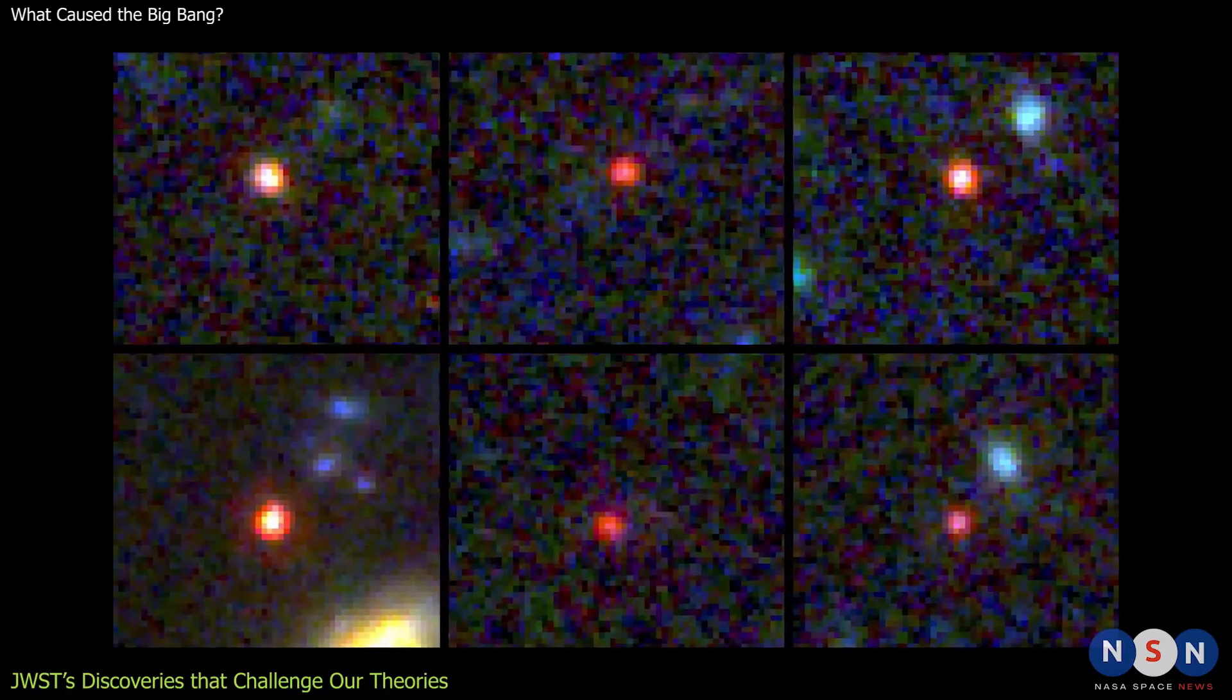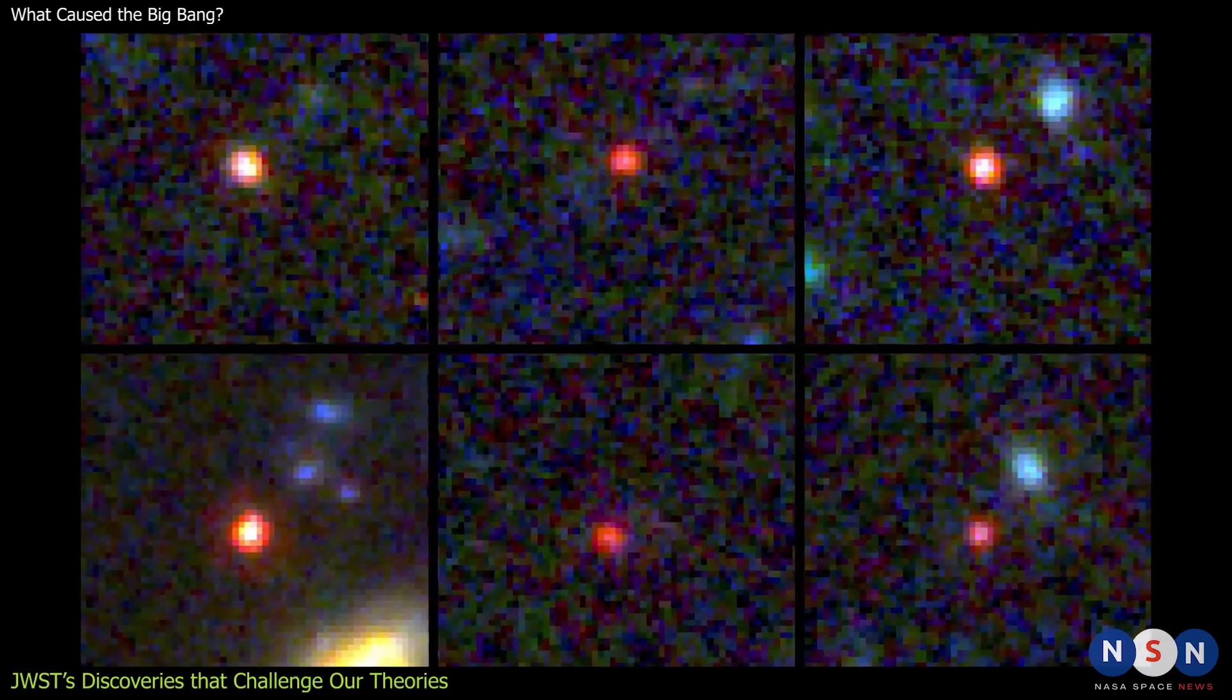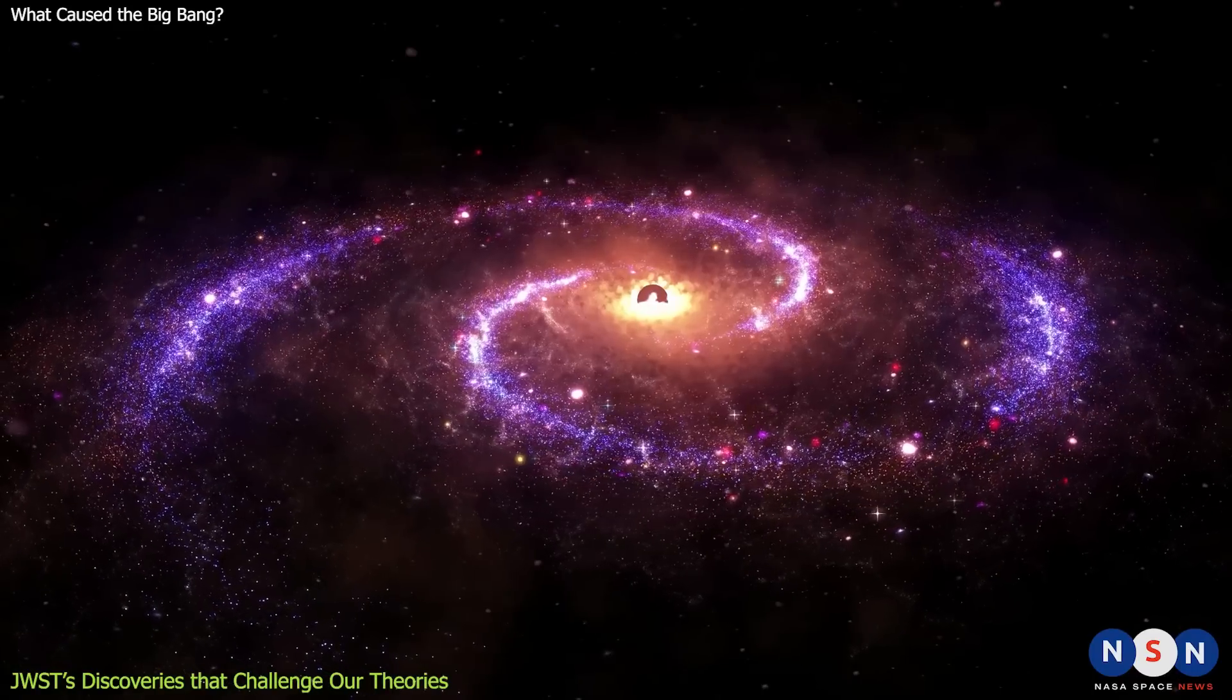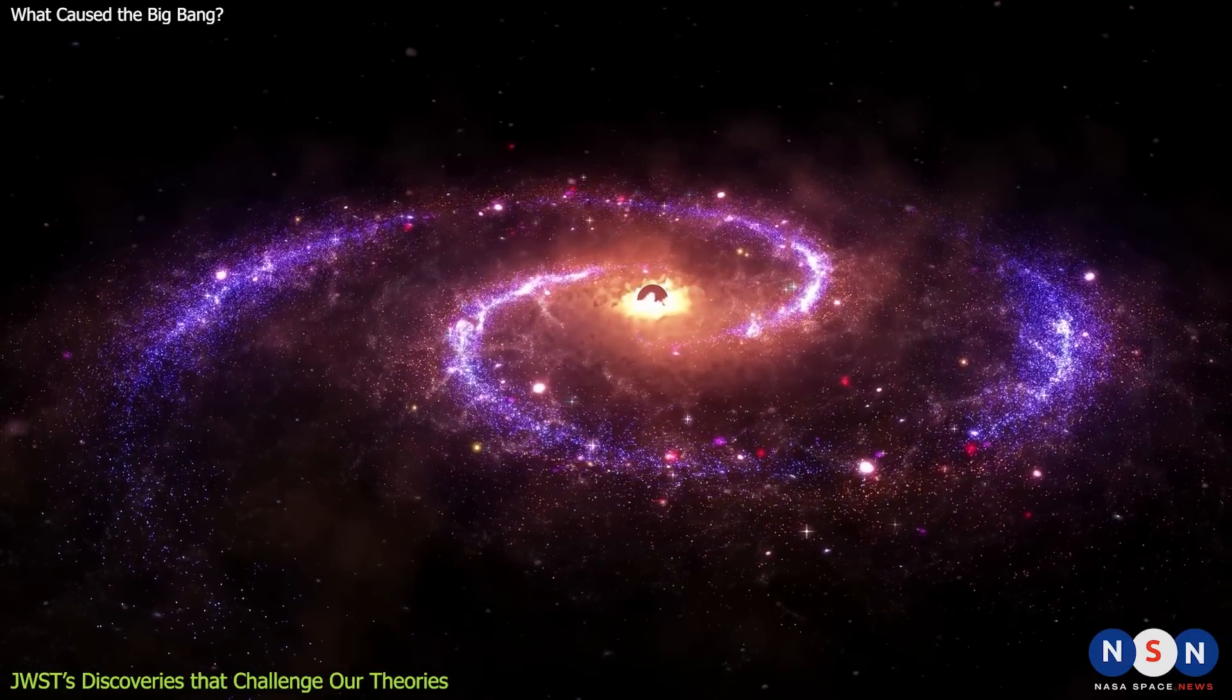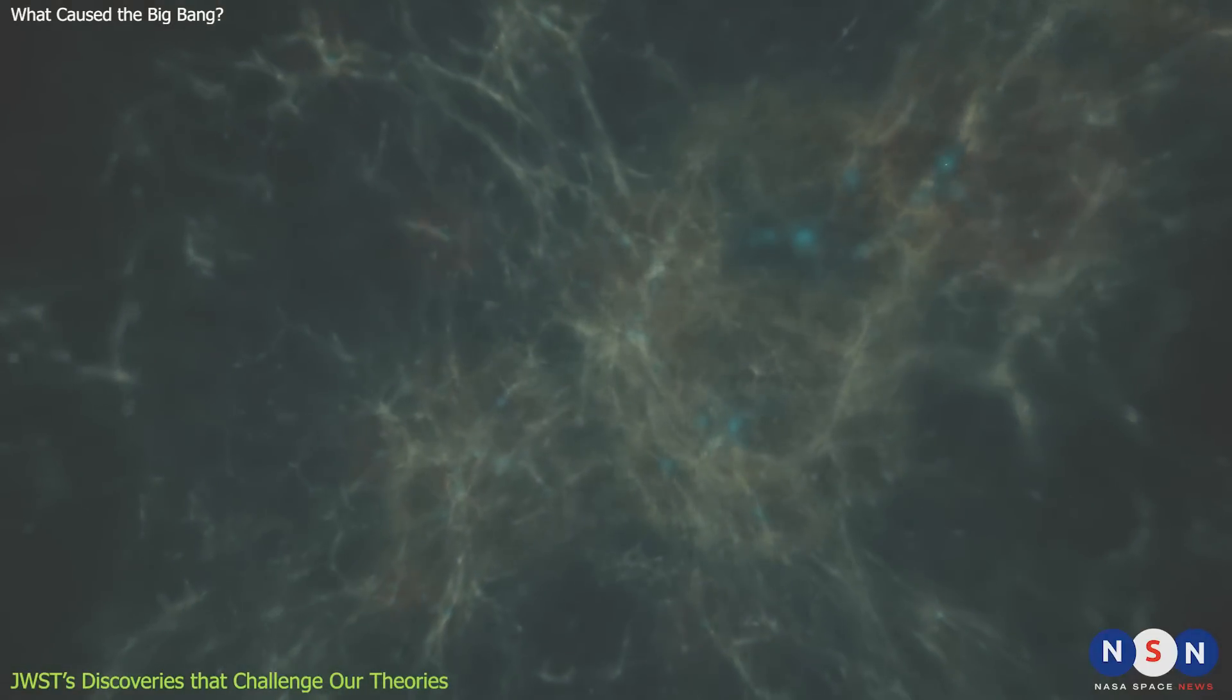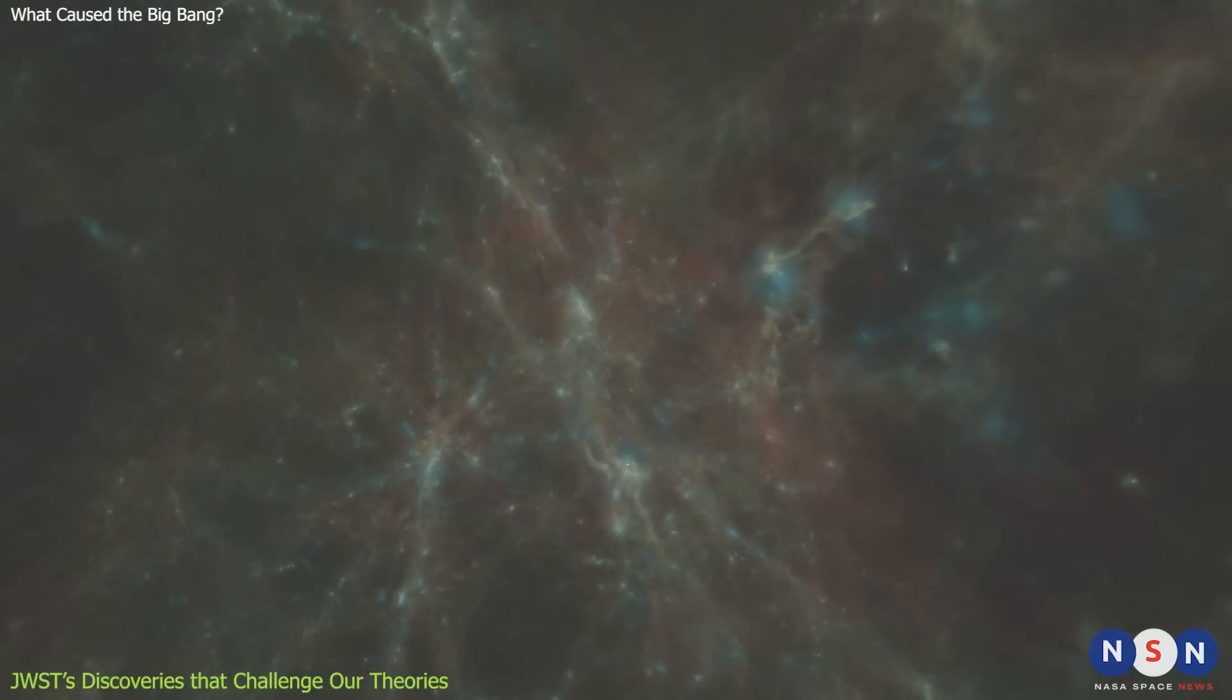Another example of a discovery that challenges our theories is the spectacular image of six ancient galaxies that James Webb captured recently. These galaxies are also very distant, dating back to when the universe was less than a billion years old. They are part of a larger structure called a protocluster, which is a precursor to a galaxy cluster, one of the largest structures in the universe.